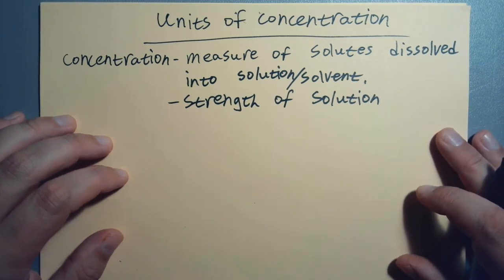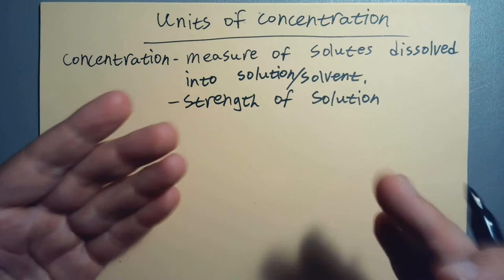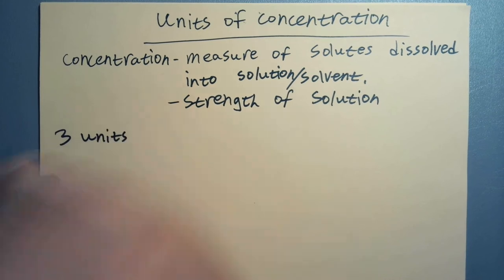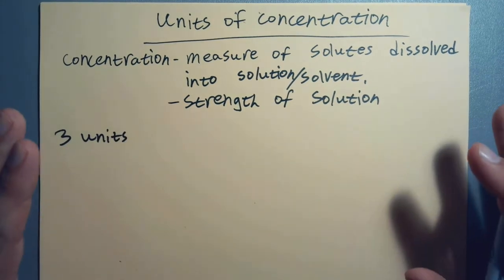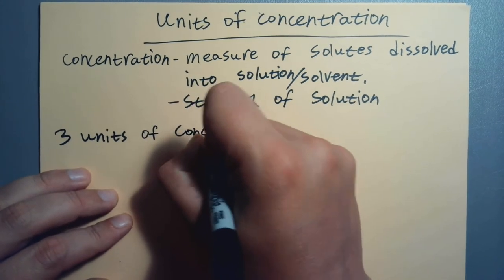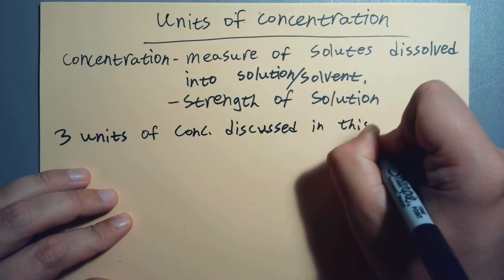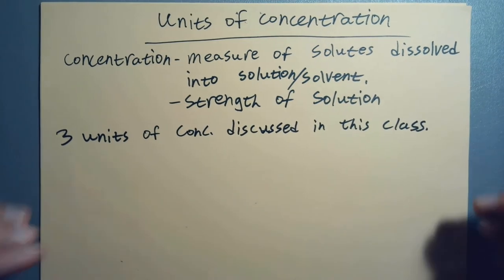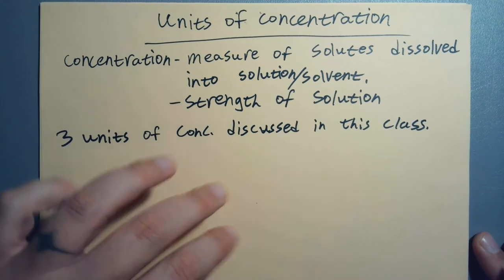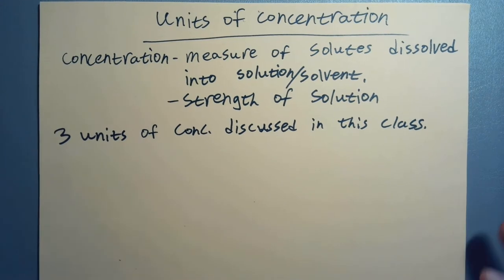So we're going to talk about three units of concentration. There are more units of concentration. I want to be absolutely clear about that. But there are three units of concentration discussed in this class. There are two that are often used in the medical field, and there's the best one, the one that the chemists use all the time. That'll be kind of where the focus is.